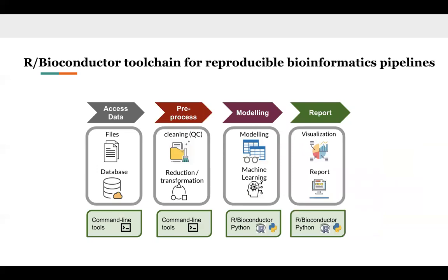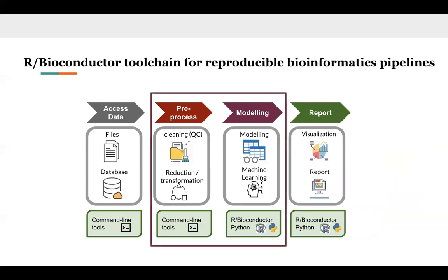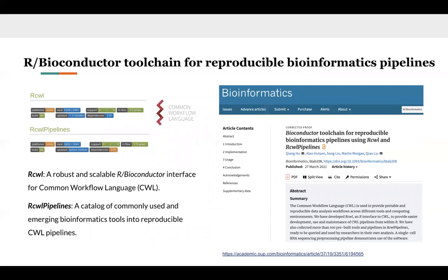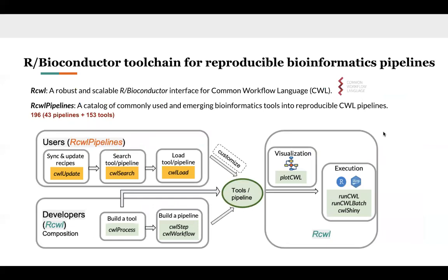To address these challenges in using workflow language and to connect the pre-processing steps and the modeling steps, we have developed two Bioconductor packages, RCWL and RCWLpipelines, to represent an R-Bioconductor tool chain for reproducible bioinformatics pipelines. First, we built a robust and scalable R-Bioconductor interface for the Common Workflow Language, and then developed RCWLpipelines as a catalog of commonly used bioinformatics tools as reproducible CWL pipelines. We now have close to 200 pre-built tools and pipelines, and this figure shows the usage of these two packages.